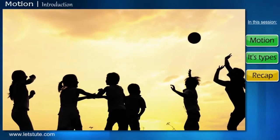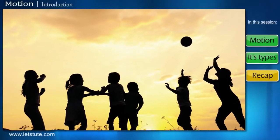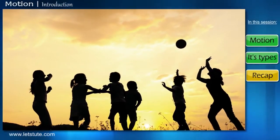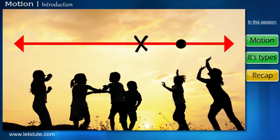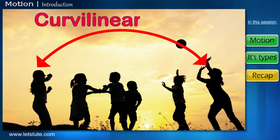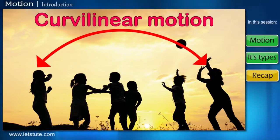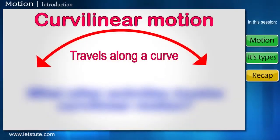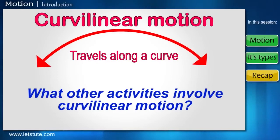Now if we consider children playing with the ball, we see that when they throw the ball in air, it does not travel along a straight line, but rather takes a curved path. This type of motion is known as curvilinear motion, in which a body travels along a curved path. Can you recognize any other activities in your day-to-day life which involves curvilinear motion?